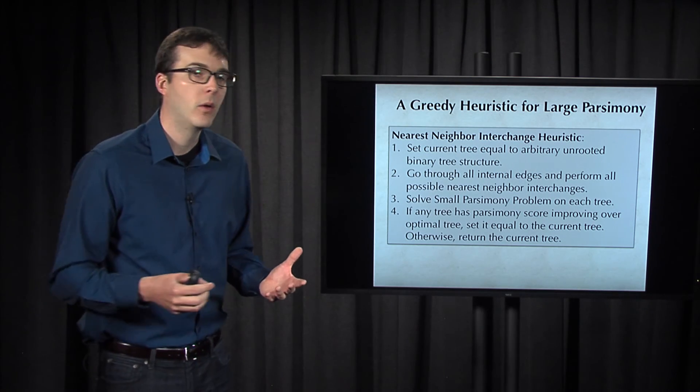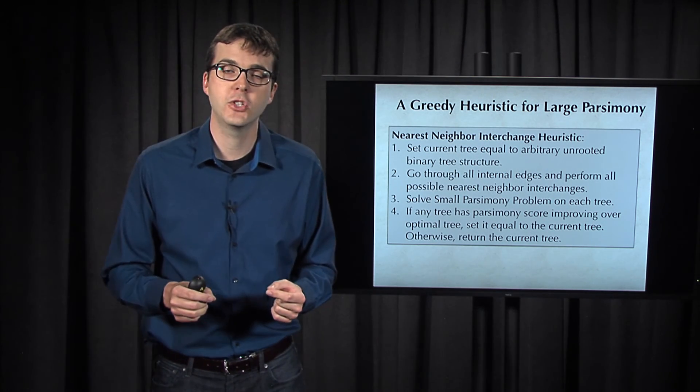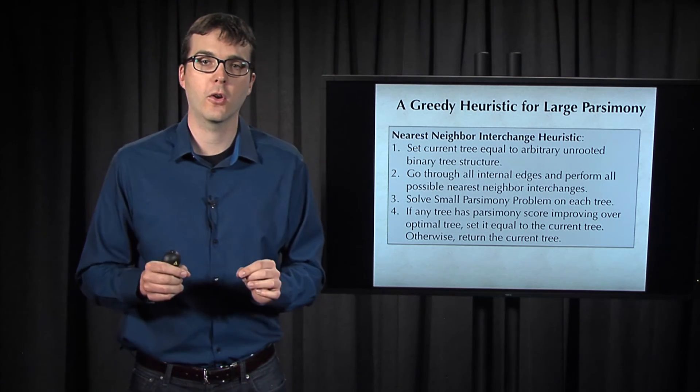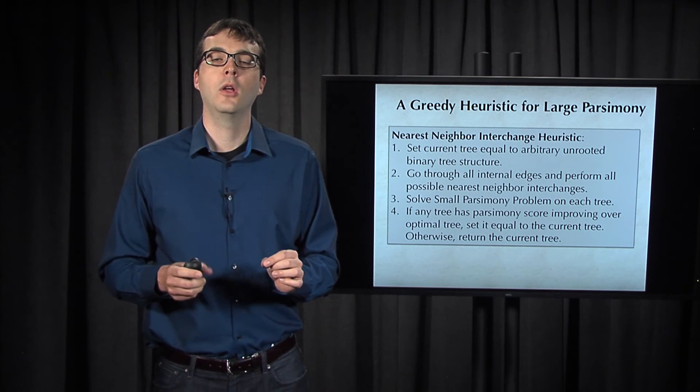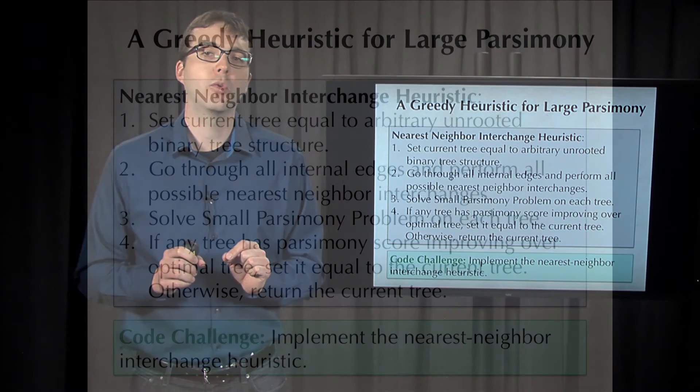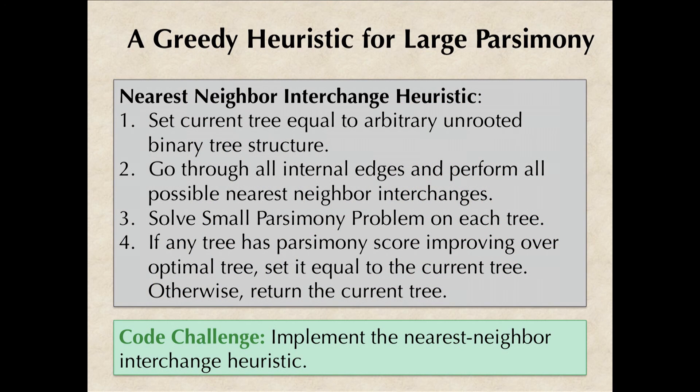Otherwise, we can't improve on the current tree via a nearest-neighbor interchange and we simply return the current tree. Try implementing this greedy heuristic yourself before we move on to the final section of this chapter.